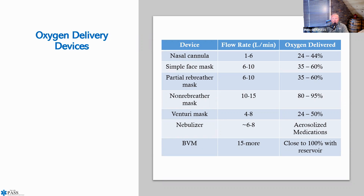Looking at the simple face mask, six to ten liters. The non-rebreather is the key one in the pre-hospital environment, delivered at a flow rate of anywhere between 10 and 15 liters per minute, giving about 80 to 95% oxygen. You won't get 100% with a non-rebreather mask because they have built-in valves—so the patient doesn't become hypercarbic and hypoxic if oxygen runs out—which is why they don't reach 100%.